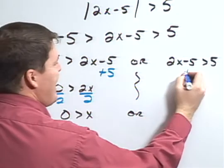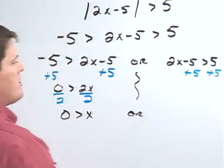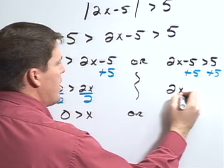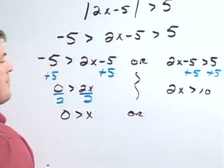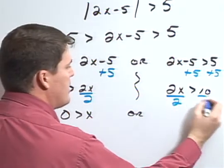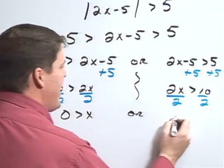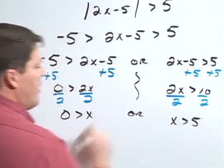Or I can add 5 to both sides to give me 2x is greater than 10 and then divide both sides by 2 to give me x is greater than 5.